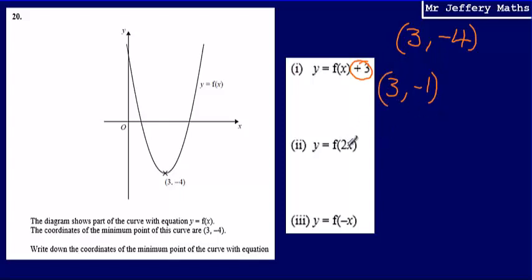The next graph transformation, we're asked for y equals f of 2x. This time the change has happened inside the bracket. That means it's going to change the x coordinate, and we're going to do the opposite of what you would expect to do. So instead of multiplying our x coordinate by 2, we're going to divide it by 2. That gives us 1.5, and the y coordinate is unchanged at negative 4.